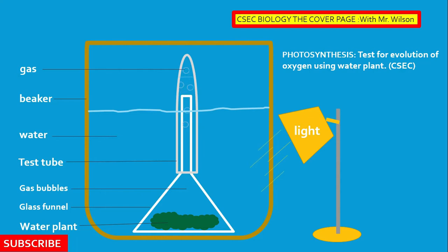Matter has mass and takes up space, so as the gas is collected in the test tube, water in the tube is displaced. The light energy powers the process of photosynthesis, enabling the plant to use simple inorganic substances to make glucose and oxygen. The oxygen is given off as a gas, as seen in the experiment with tiny bubbles rising from the water plant.